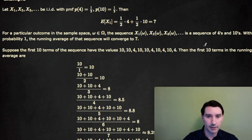So let's suppose that we got a sequence for a particular omega, which was 10, 10, 4, 10, 10, 4, 10, 4, 10, 4, and so on. Maybe these are the first 10 terms in the sequence.